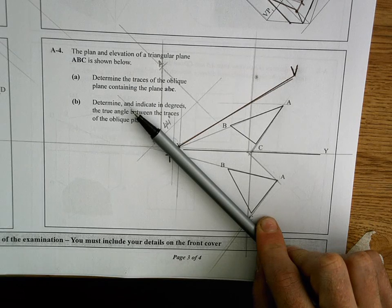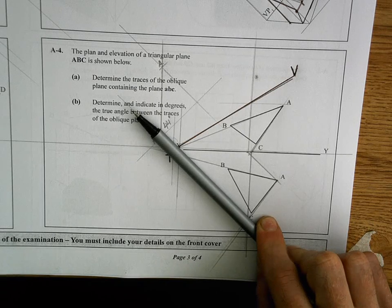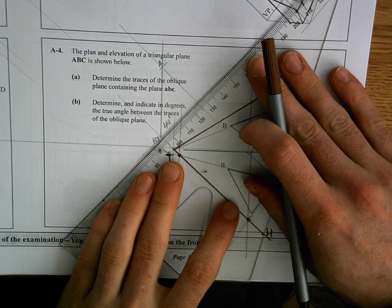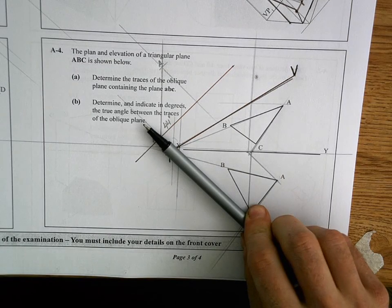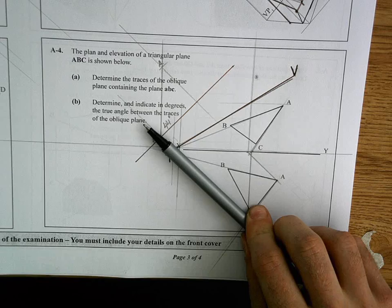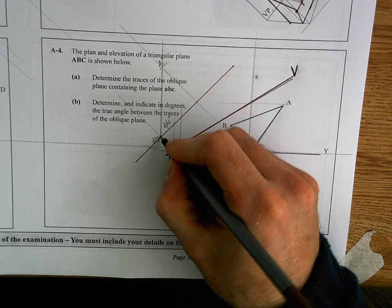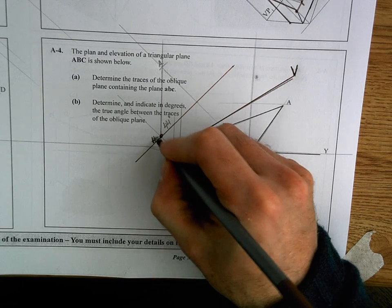We're going to create an auxiliary view. So we get our X1, Y1 line, 90 degrees to our horizontal trace. We look up along it. The horizontal trace is on the ground. So that means I see it just as a single point. That's my horizontal trace.